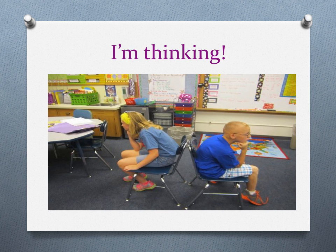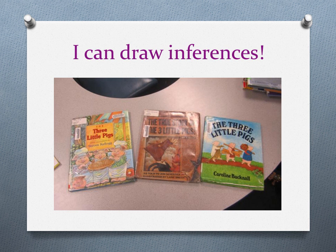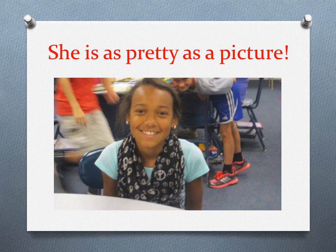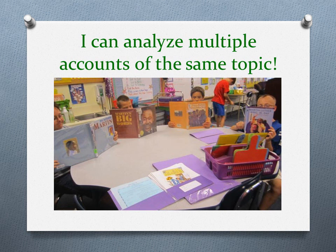Here are three examples of 5th grade Common Core English Language Arts standards. I can quote accurately from a text when explaining what the text says explicitly and in drawing inferences from the text. I can determine the meaning of words and phrases as they are used in a text, including figurative language such as similes and metaphors. I can analyze multiple accounts of the same topic, noting similarities and differences in the point of view they represent.